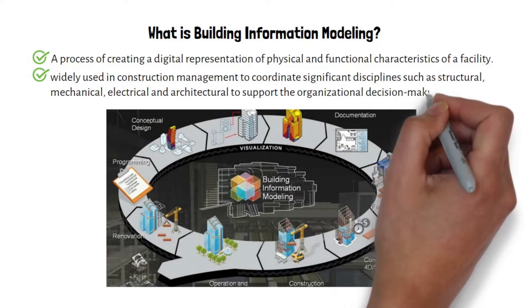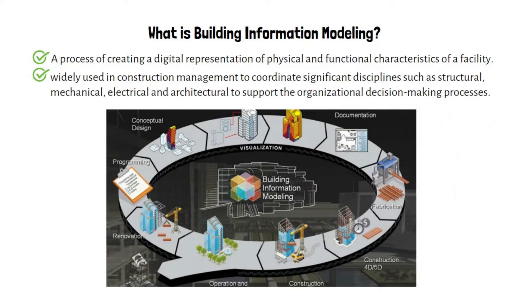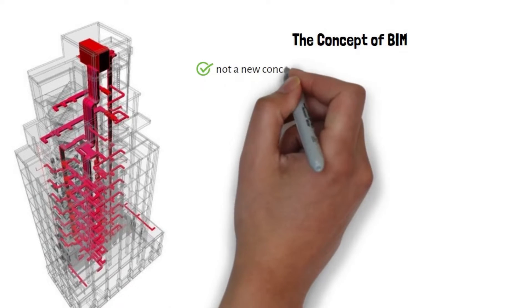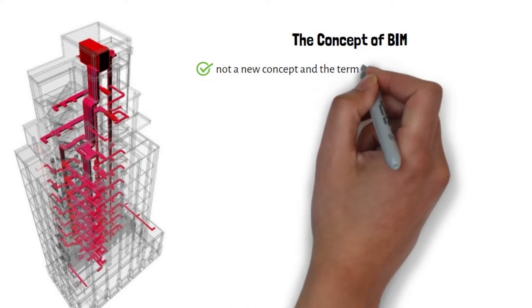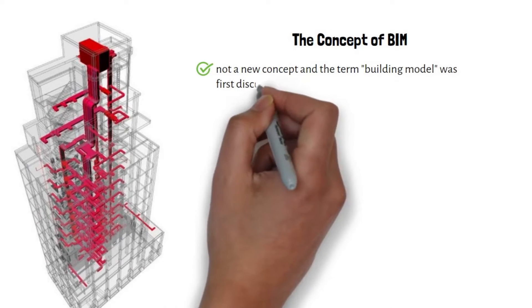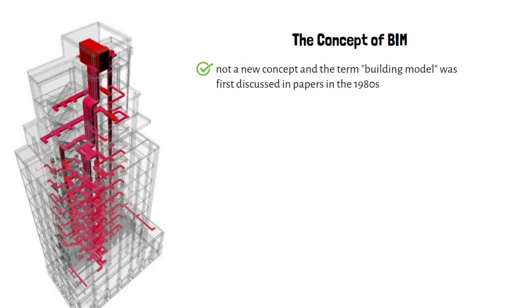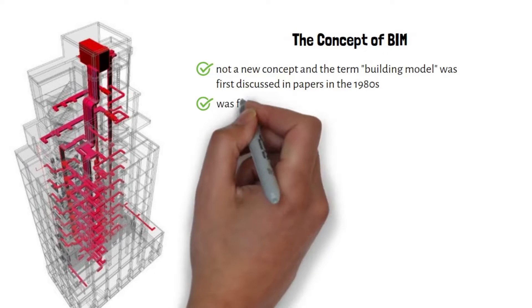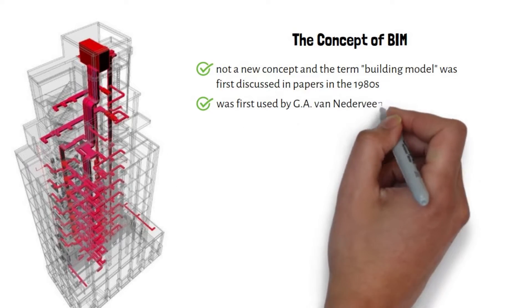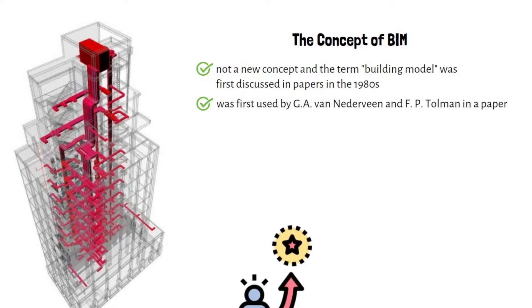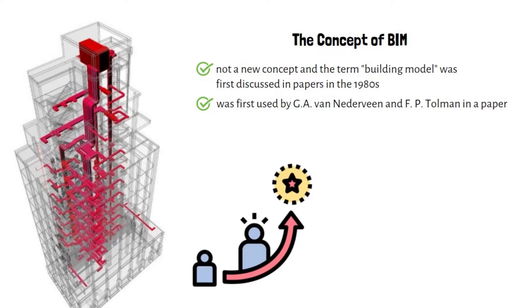The concept of BIM is not a new one. The term 'building model' was first discussed in papers in the 1980s. The term 'building information model' was first used by G.A. van Netterveen and F.P. Tolman in a paper. However, the term BIM only became popular more than 15 years later.